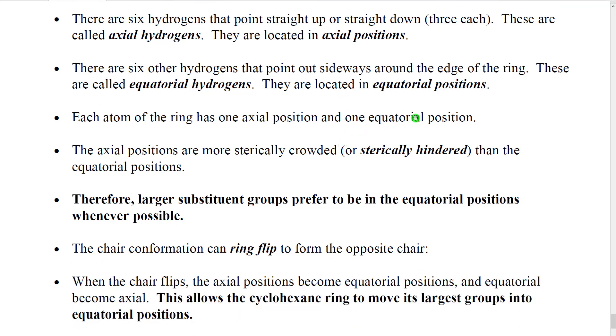Now, the significance of the axial and equatorial is that axial positions are more sterically crowded, they're more sterically hindered. Therefore, when we have a large group, if we put it in an axial position, it's going to bump more against the neighboring axial groups. That's going to increase the potential energy. So larger substituents prefer to be in equatorial positions.